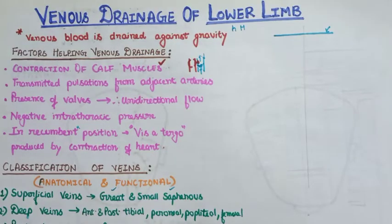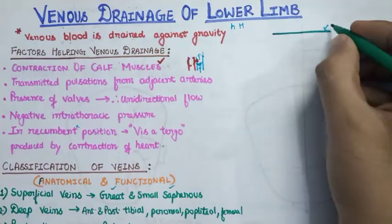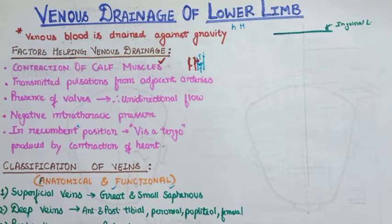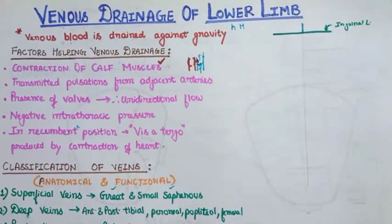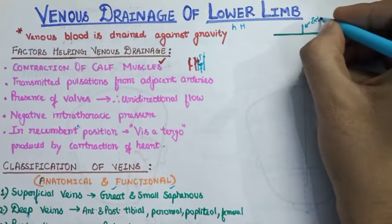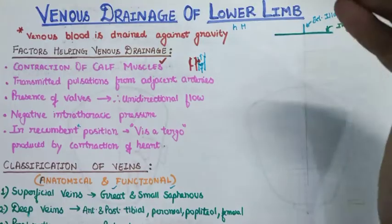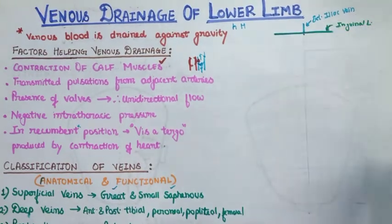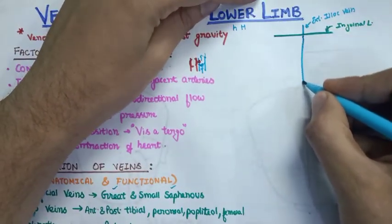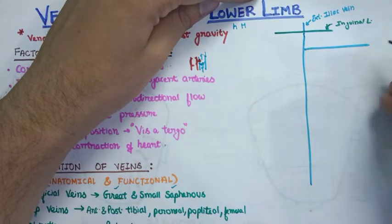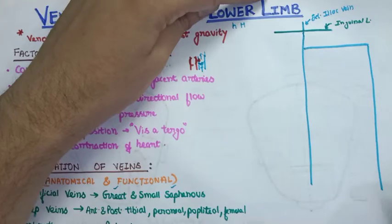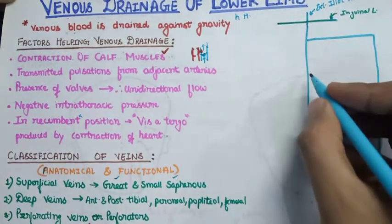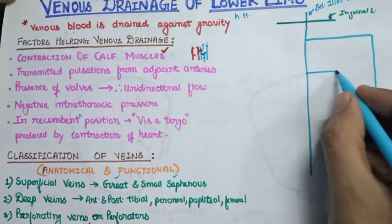First, draw the inguinal ligament — shown here in a different color. As you know, the external iliac vein when it proceeds down below the inguinal ligament forms the femoral vein. Now to draw the diagram, draw a straight line and make an H shape. Then draw a second H taking the same baseline, adding one more edge on top.